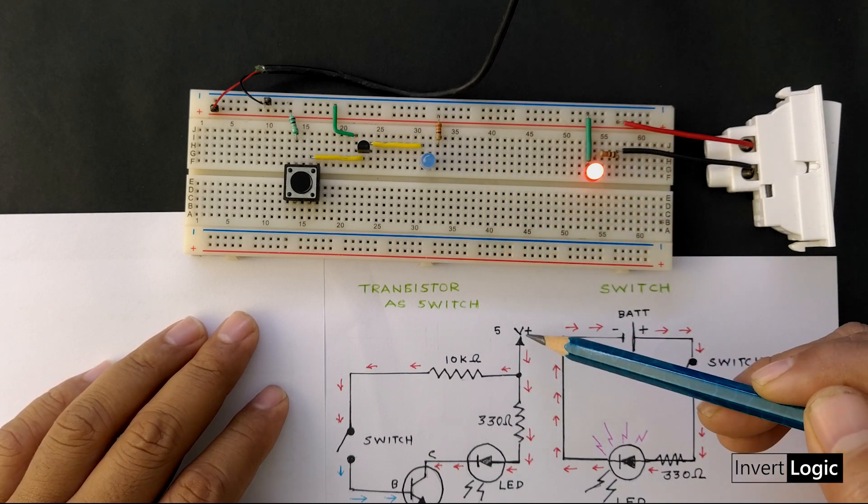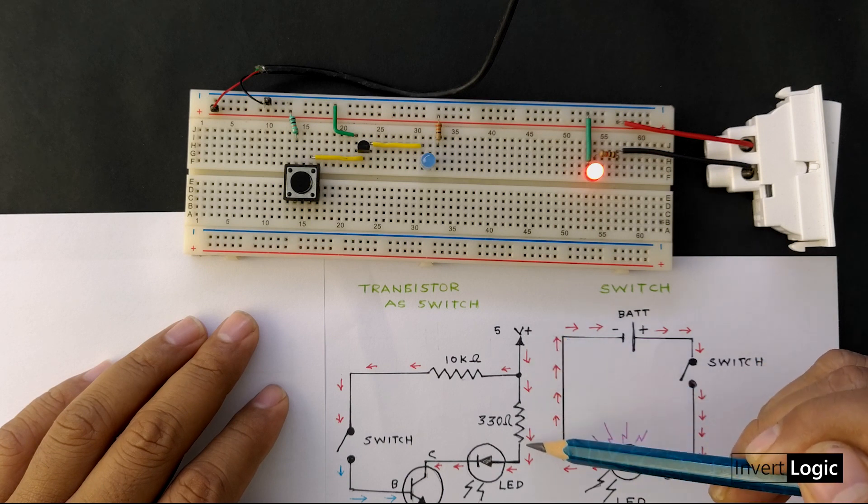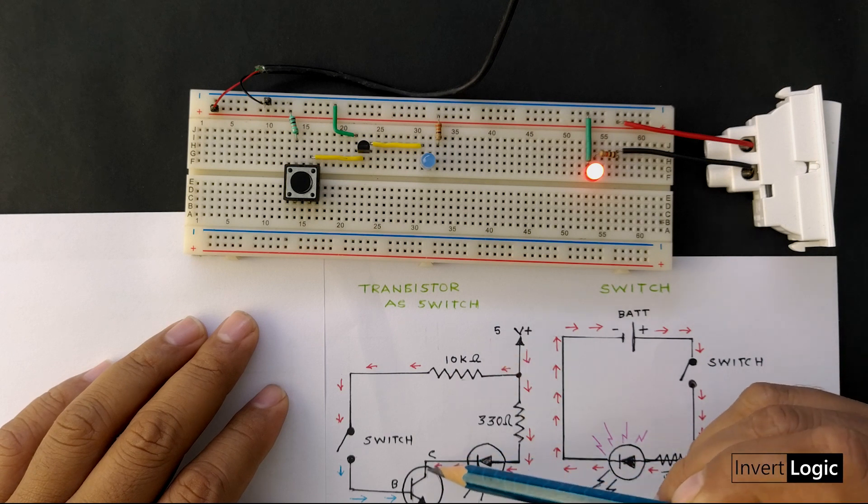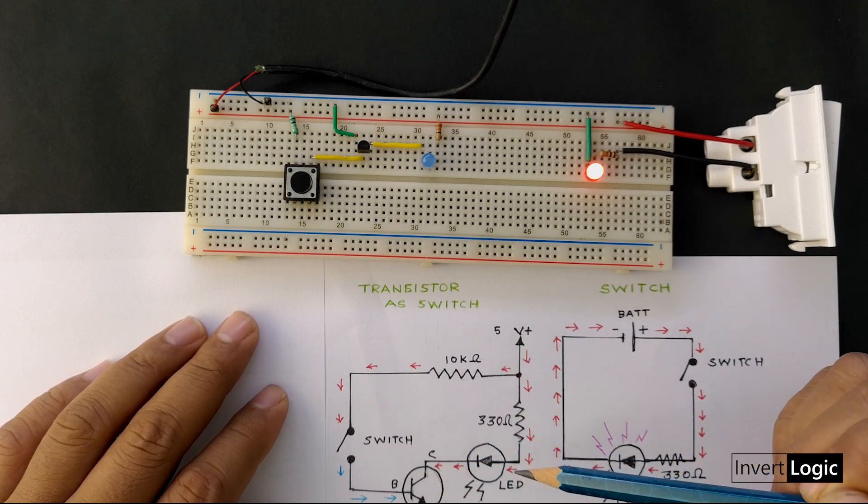In this another schematic, you can see we have the same resistor connected to the plus 5 volts. After that, we have the LED which is then connected to the collector of the transistor.